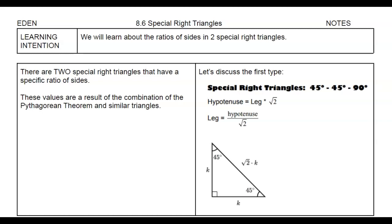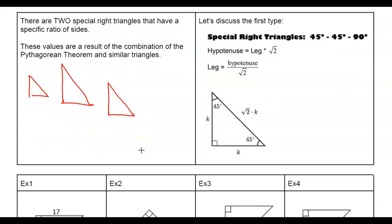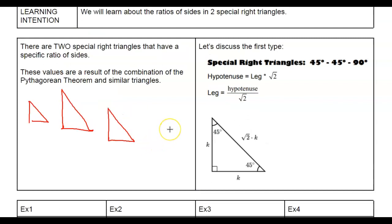We're still going to use the idea that if they're all right triangles and they have the same angles, we can have dilations, so there are still a ratio of sides for the similar triangles. But this does not use trig — it's really a result of the Pythagorean Theorem and similar triangles, not trig. The first one we're going to discuss is the 45-45-90 right triangle.